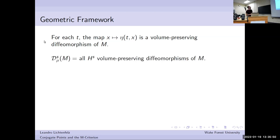I'd like to look at the set of all of those, which is this object Ds_mu of M. This is just a collection of all volume-preserving diffeomorphisms of M. You can think of things like rotations, but more generally any sort of deformation of your fluid domain that preserves volume.